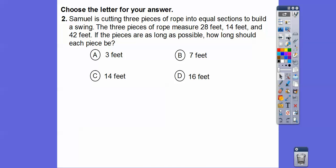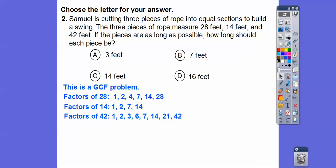All right. So here's another one. Samuel is cutting three pieces of rope into equal sections to build a swing. The three pieces of rope measure 28 feet, 14 feet, and 42 feet. If the pieces are as long as possible, what should each piece be cut into? This is the greatest common factor problem. So I'm going to show you by factors of each number. Factors of 28: one goes into 28, two does, four does, seven does, fourteen does. Here's all the factors of 14, here's all the factors of 42. So the greatest one that they have in common is this 14 right there. So choice C.